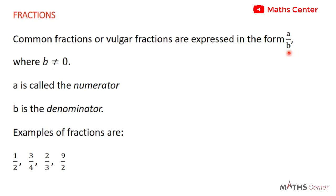We want to look at some examples of fractions. Examples are 1 over 2, 3 over 4, 2 over 3, 9 over 2. These are all examples of fractions. In 1 over 2, 1 is the numerator and 2 is the denominator. Here, 3 is the numerator and 4 is the denominator. 2 is the numerator, 3 is the denominator. Then 9 is the numerator and 2 is the denominator.